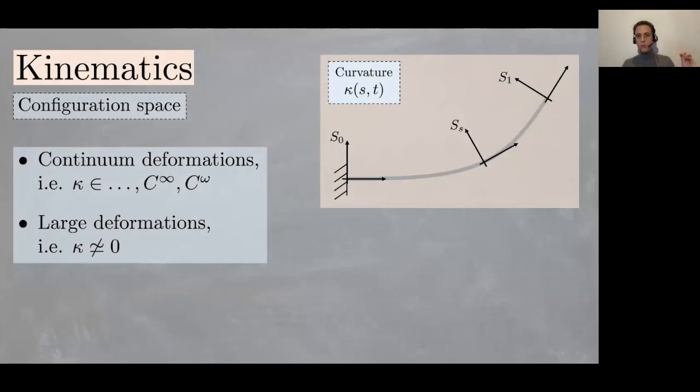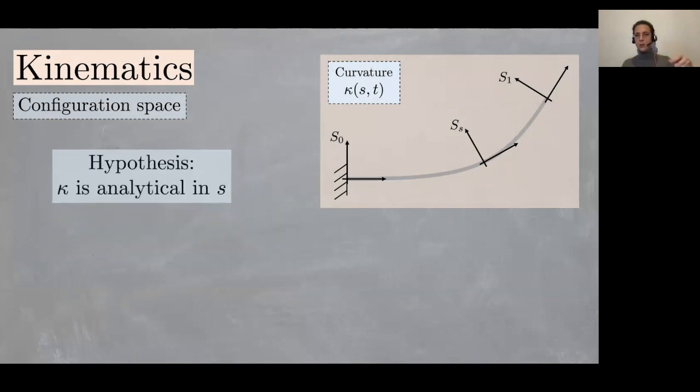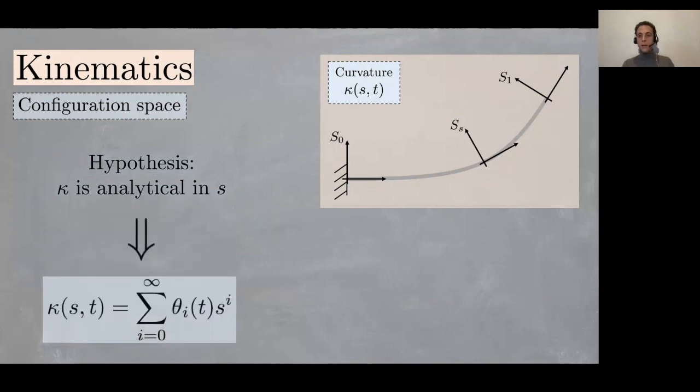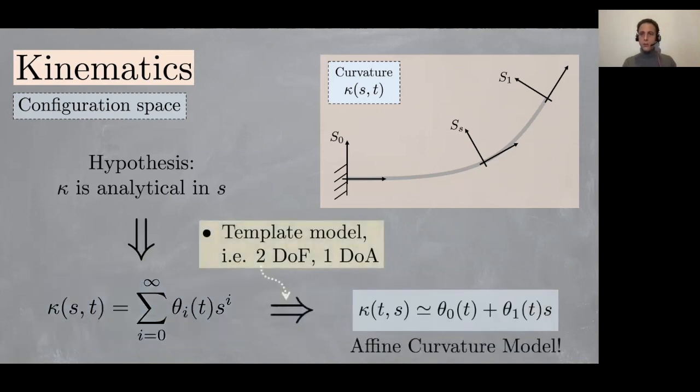Let's start from the first two constraints. They can be merged together in a single hypothesis, which is that kappa is a generic analytic function. If we have a generic analytic function, we can express it as an infinite summation of monomial terms where we put all the temporal information in theta. We can apply the third hypothesis by truncating this infinite summation at the second order.